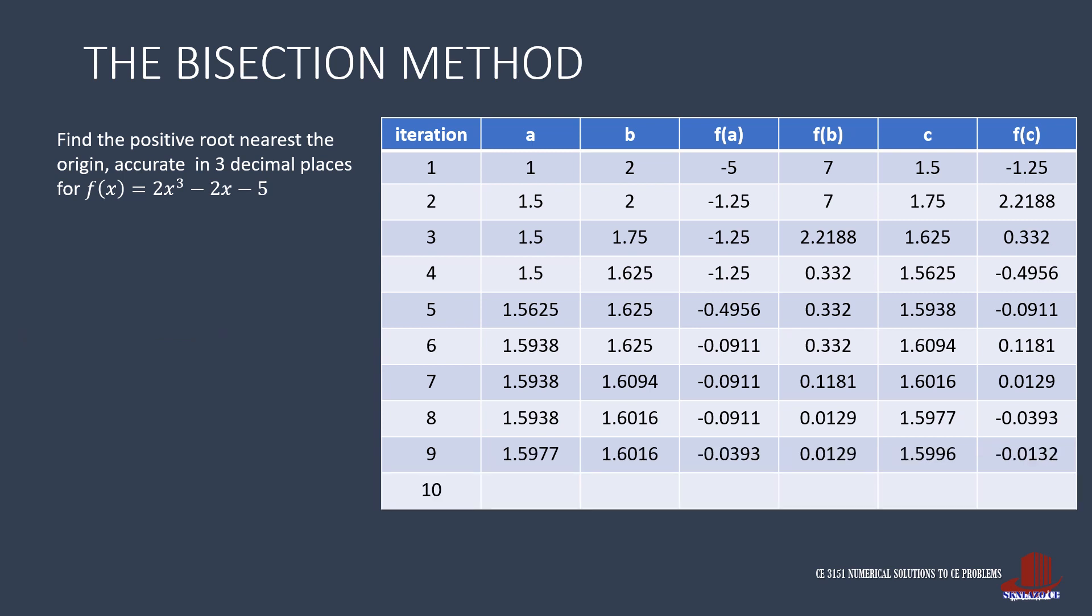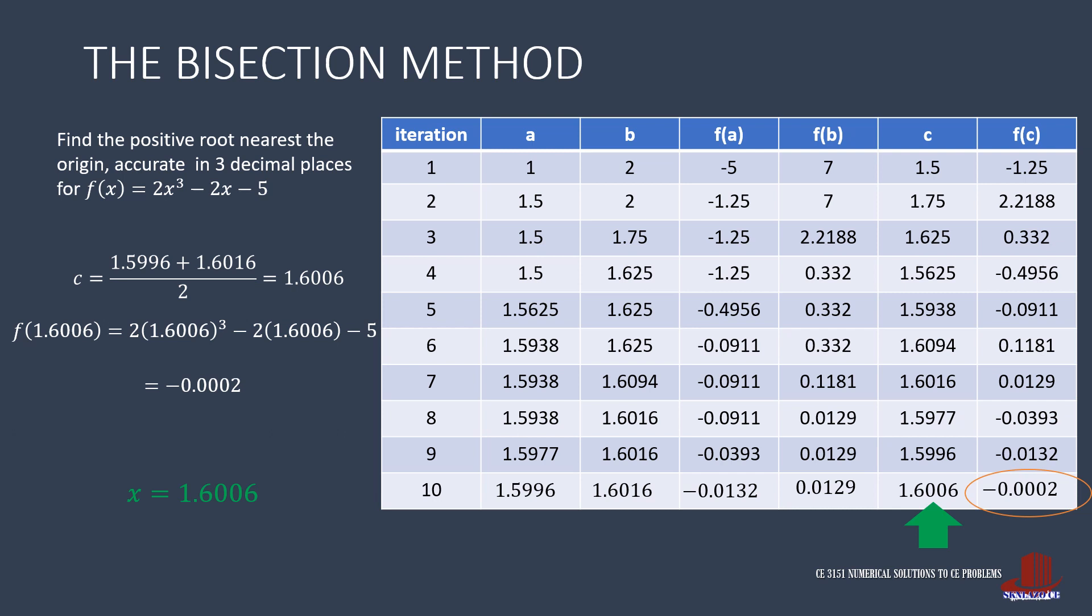So we continue the iteration with A as 1.5996, with its F of A as negative 0.0132. B stays the same as 1.6016 and F of B as 0.0129. Take the average of A and B as C. That is, 1.5996 plus 1.6016 divided by 2, resulting to 1.6006. Use this for F of C to have negative 0.0002. With F of C having three zero decimal places, we have reached the instructed accuracy, which means the x-intercept we are looking for is 1.6006.